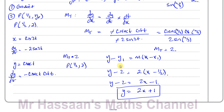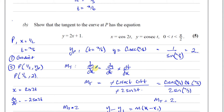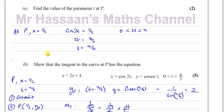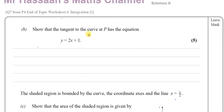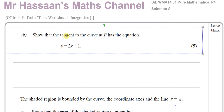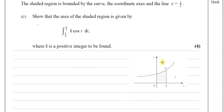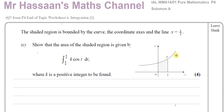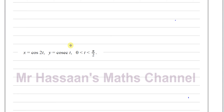That's part (b) done — finding the tangent using the chain rule for parametric equations. For part (c), the shaded region is bounded by the curve, the coordinate axes, and the line x = 1/2. We need to show that the area of the shaded region is given by a specific integral where k is a positive integer to be found.